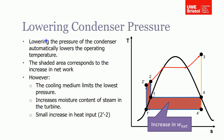Starting with lowering the condenser pressure: I've drawn the original Rankine cycle, and with dashed lines I've shown the new points if each change is applied. You can see that by dropping to a lower condenser pressure, everything else being the same, this results in a shaded area representing the increase in net work done in the system.